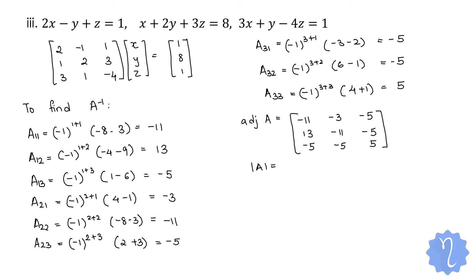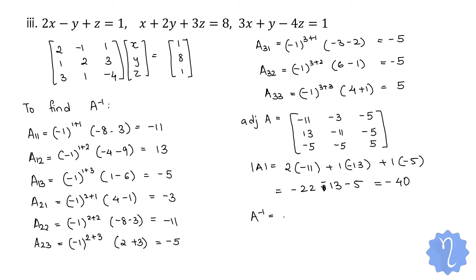Determinant of A = 2·(−11) + (−1)·(13) + 1·(−5) = −22 − 13 − 5 = −40. Therefore A⁻¹ = (1/det A) · adj A. Taking the minus sign inside: A⁻¹ = (1/40) · [11, 3, 5 / −13, 11, 5 / 5, 5, −5].